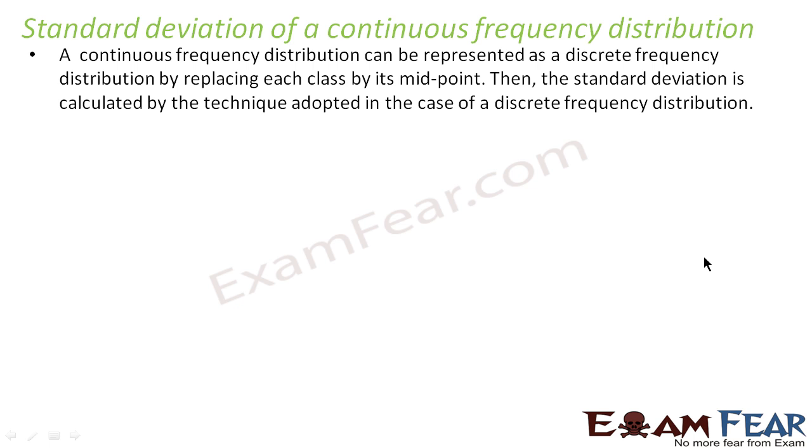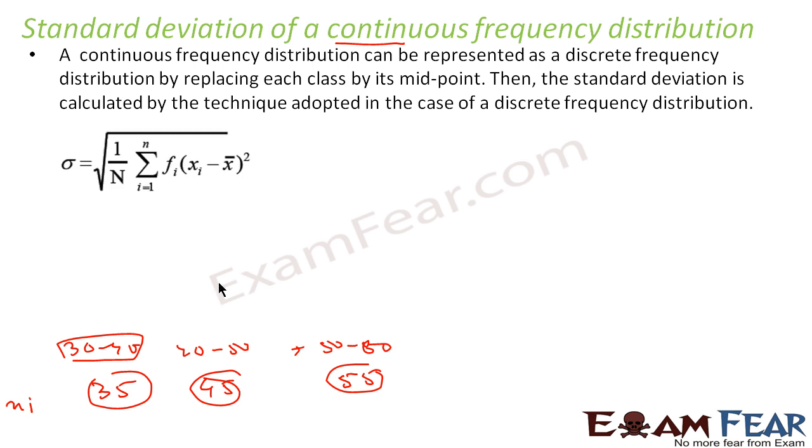This case is similar to discrete frequency distribution. The only difference is you have class intervals. For example, 30 to 40, 40 to 50, 50 to 60. Instead of this class, we'll take xi as the midpoints, like 35, 45, 55. Once we have the midpoints xi's and frequencies, we can use the same formulas.